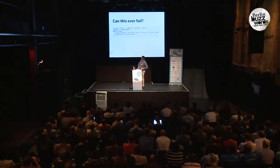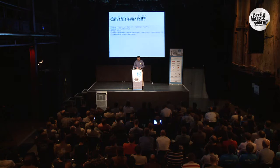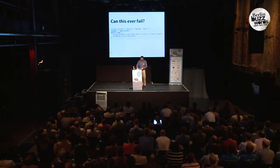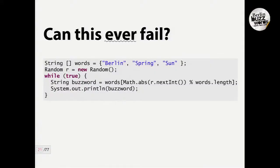For instance, if I show you this snippet of code — can you see it in the back? Can you tell me if this can ever fail? What's the catch here?